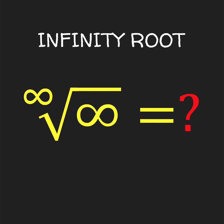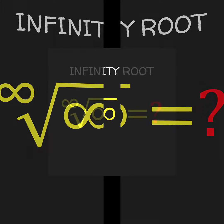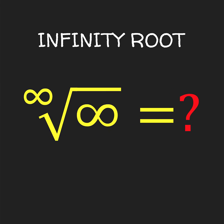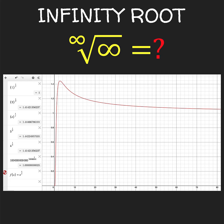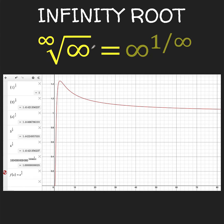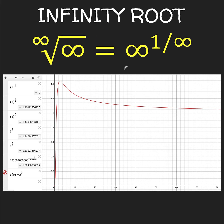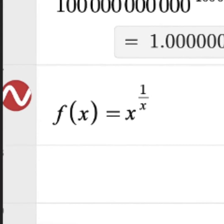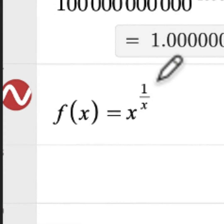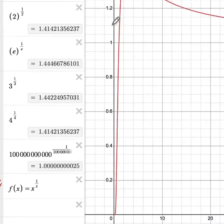My first impulse when solving a problem is to try to visualize the problem. Using Desmos graphing calculator, here is what I found. We know that radicals are equivalent to fractional exponents, so we can write this as infinity raised to 1 over infinity. Then graphing x raised to 1 over x, here is the graph.